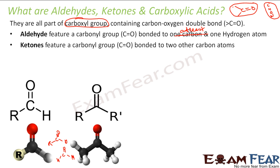Now, if both bonds on the carbonyl carbon have alkyl groups instead of hydrogen, then it is called a ketone. So you take the same C=O and put some alkyl group on both bonds — it becomes a ketone.